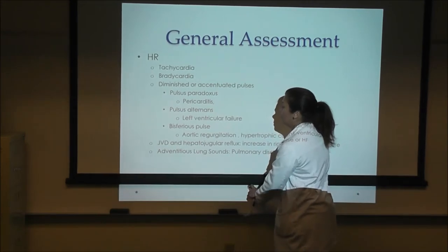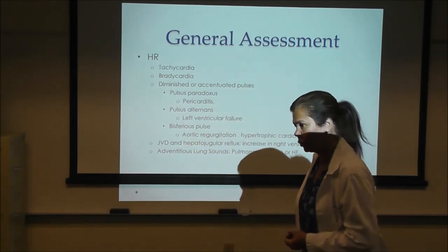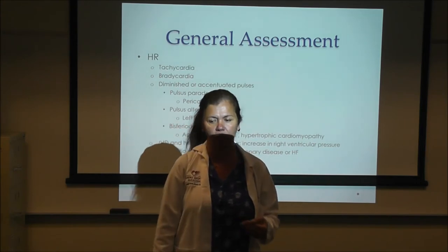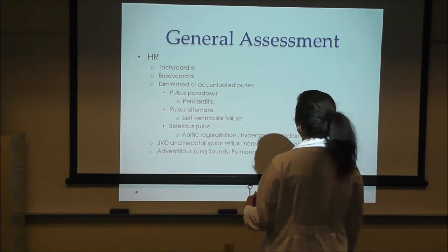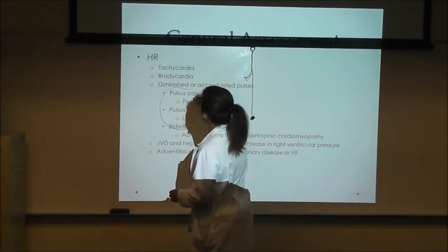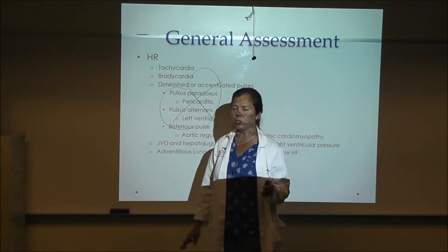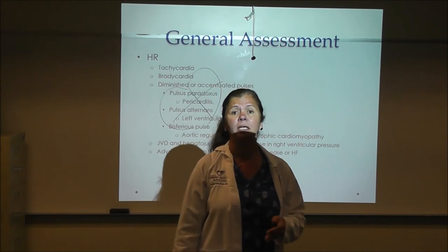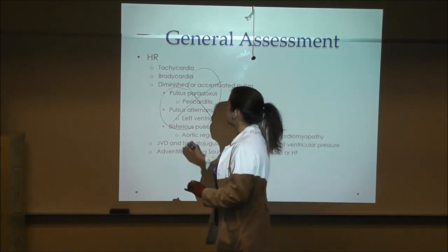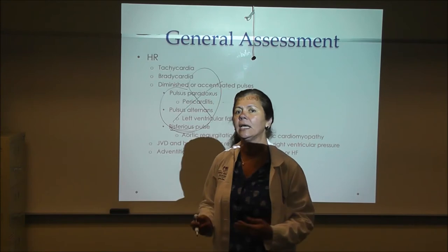Another cardiovascular assessment is jugular venous pressure. We can palpate the liver and assess hepatojugular reflux. In right-sided heart failure, blood coming through the right atrium is impeded — either because the patient has tricuspid regurgitation or stenosis, or because of dilation or hypertrophy of the right ventricle — making it difficult for preload to enter the right side of the heart.